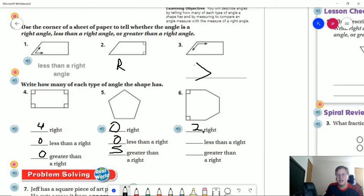Number six, we have two right angles, and then we have four angles that are greater than a right angle.